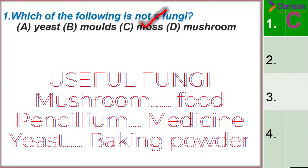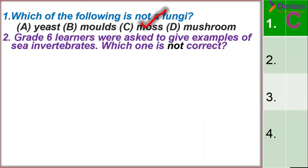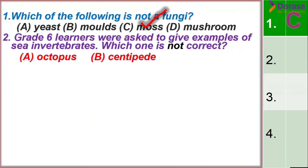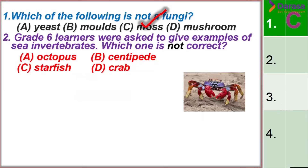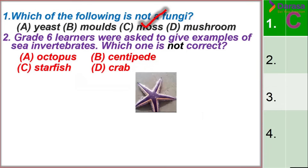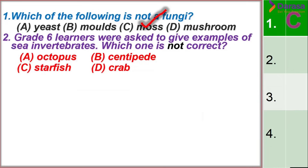Question 2: Grade 6 learners were asked to give examples of sea invertebrates. Which one is NOT correct? The choices are octopus, centipede, starfish, and crab. The correct answer is centipede — it lives in wet, moist areas, while the rest live in water.